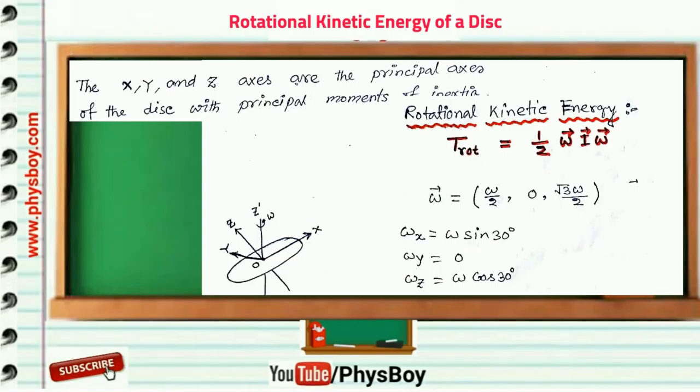So omega can be written in matrix form. Omega by 2, that is, value of sine theta is 1/2, so X component of the omega is omega by 2. Y component of the angular velocity is 0.